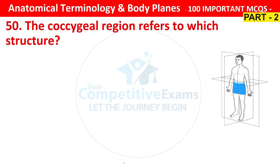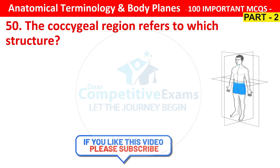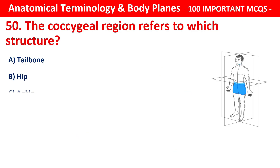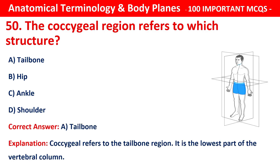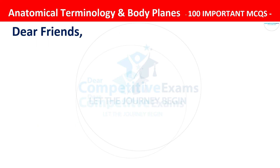Question number 50. The coccygeal region refers to which structure? Your options are tailbone, hip, ankle or shoulder. The right answer is A, that is tailbone. Coccygeal refers to the tailbone region — it is the lowest part of the vertebral column.